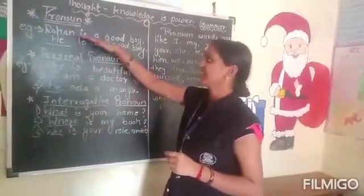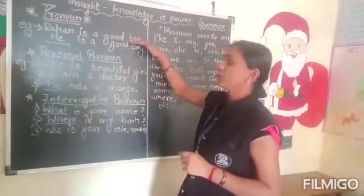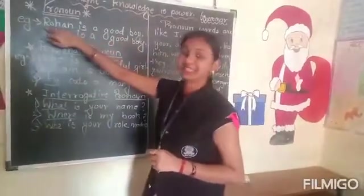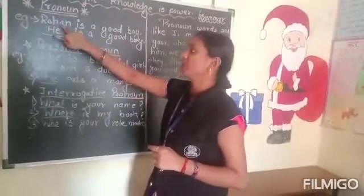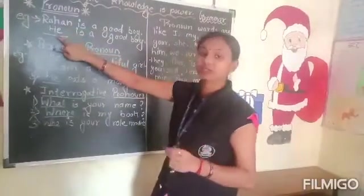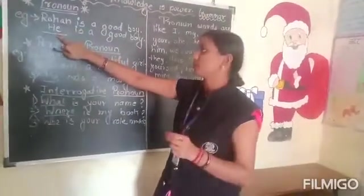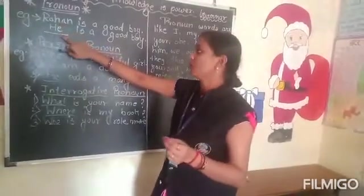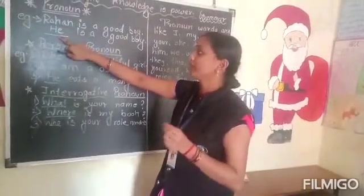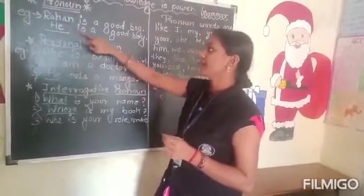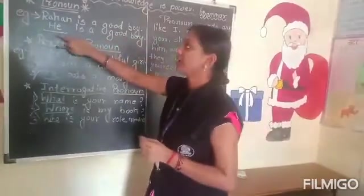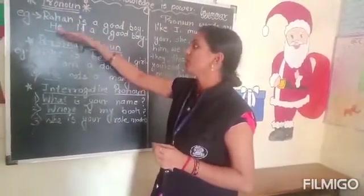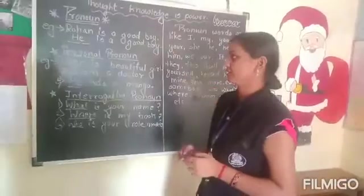For example, Rohan is a good boy. What is the noun here? Rohan is the noun. Instead of the noun, we have to put a pronoun. So instead of Rohan, we have to put 'he'. He is a good boy. Then 'he' becomes the pronoun.